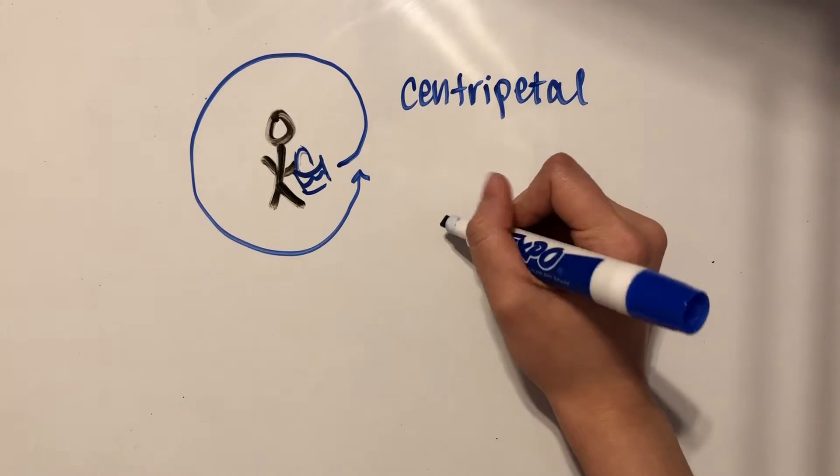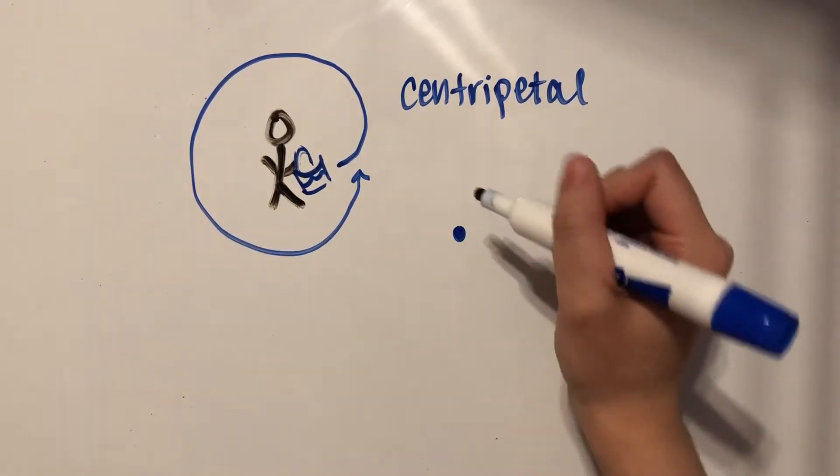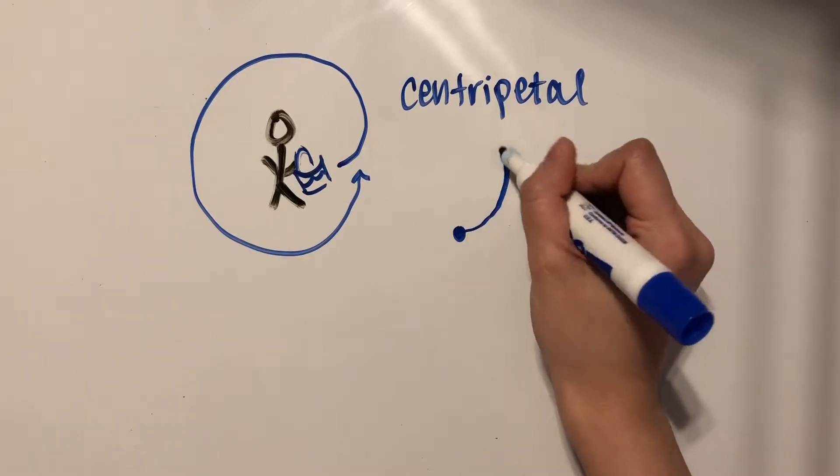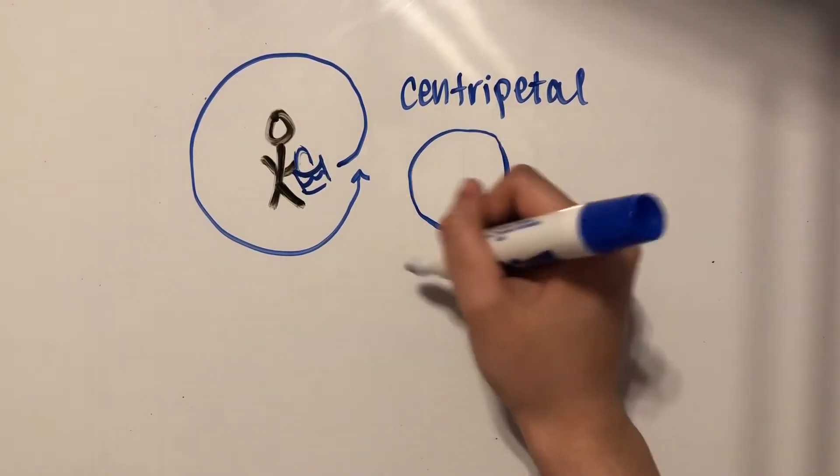If we were to represent this in a diagram, we'd draw the pail as a point-like object, and its path would look something like this. It's going this way, which is counterclockwise.